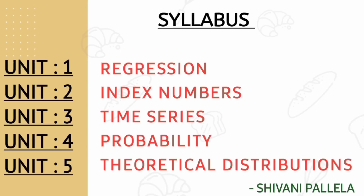Coming back to the syllabus, there are a total of five units. Unit one is Regression, unit two is Index Numbers, unit three is Time Series, unit four is Probability, and unit five is Theoretical Distributions. It is an 80 marks paper and 36 or 34 is the passing marks.